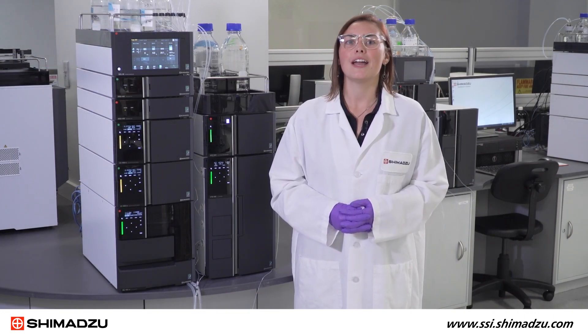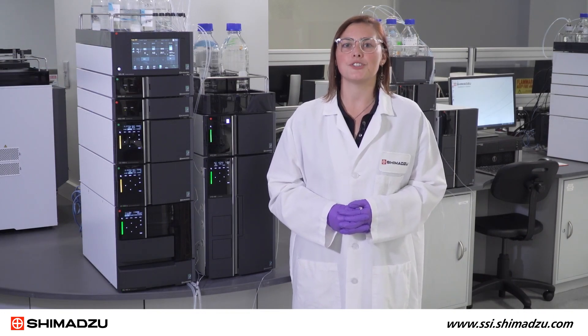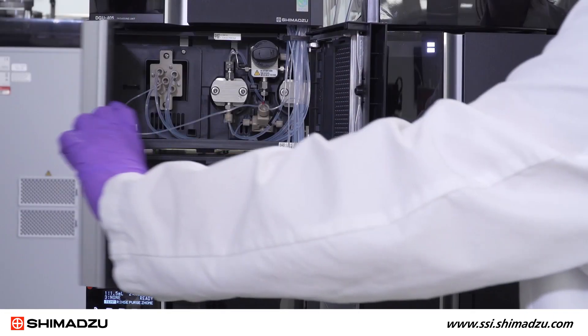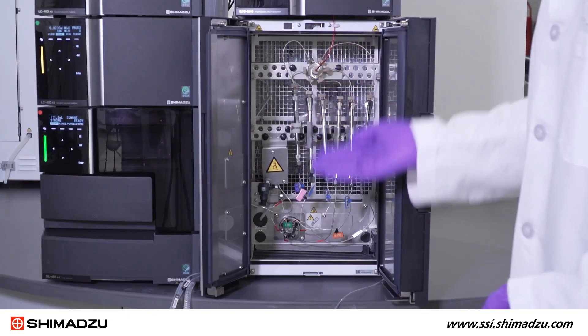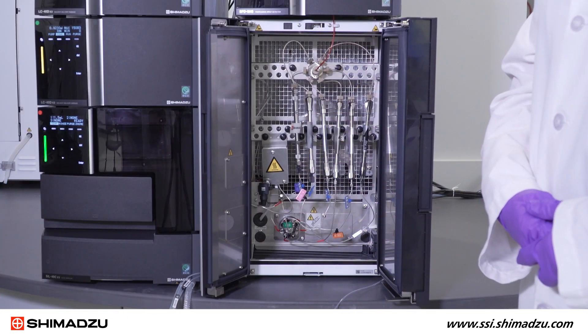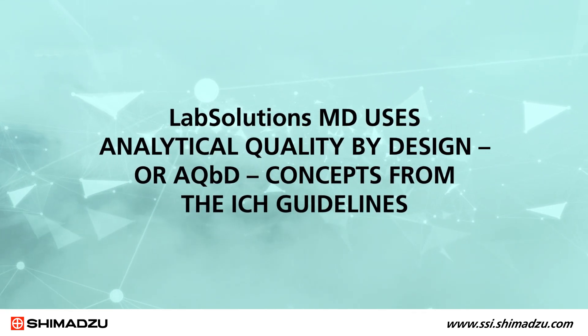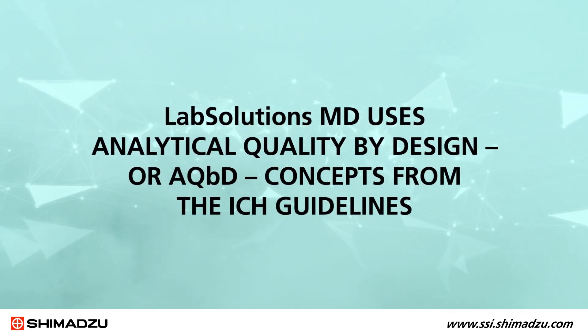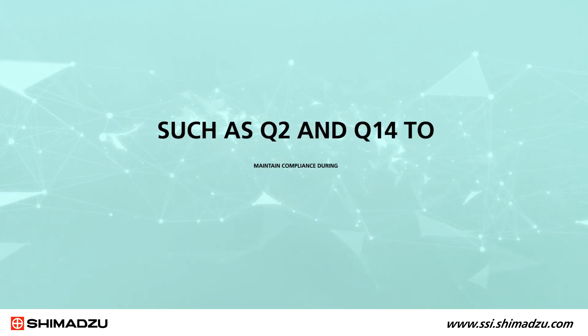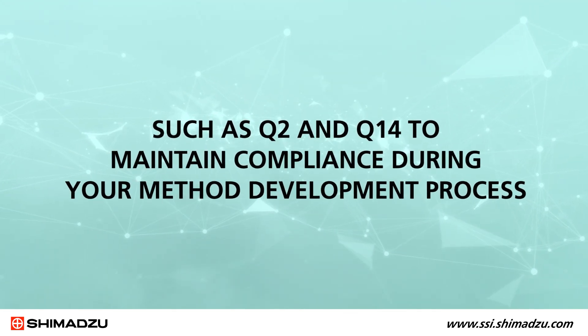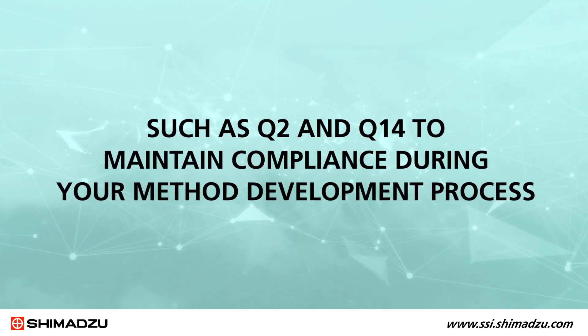The method development software is used with the Shimadzu method scouting system, where up to 8 different solvents and 12 different columns can be tested. Lab Solutions MD uses Analytical Quality by Design, or AQBD, concepts from the ICH guidelines such as Q2 and Q14 to maintain compliance during your method development process. Additionally, Lab Solutions MD alleviates the tedious task of testing, analyzing, and comparing several individual runs.